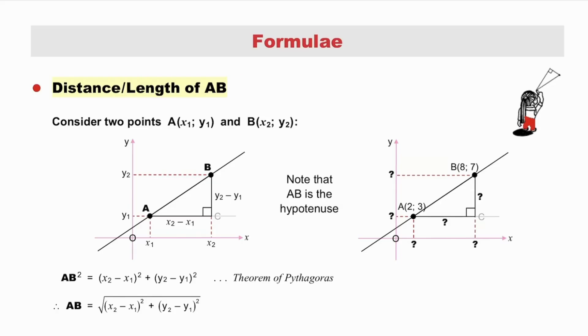Let's find the distance or length of AB, where A and B on the figure here are the points (x1, y1) and (x2, y2). Note that AB is the hypotenuse of a right-angle triangle, and this invites us to think of applying the theorem of Pythagoras.